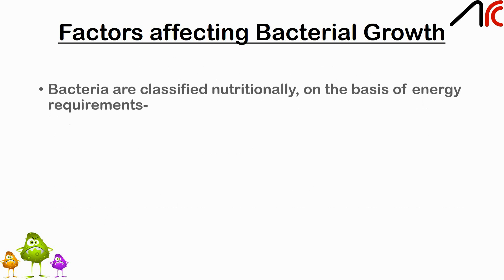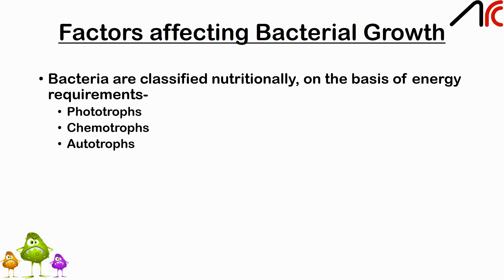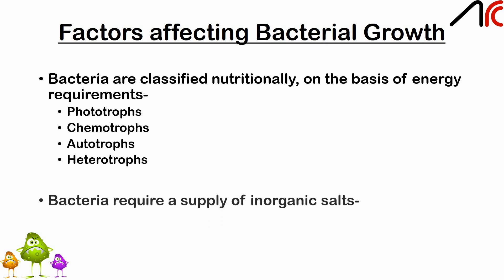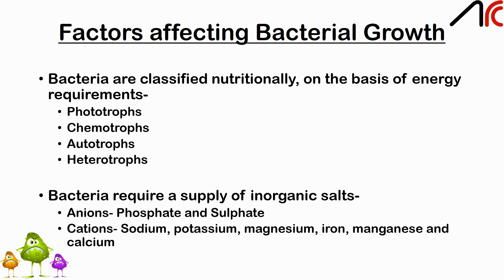Factors that affect growth: bacteria can be classified nutritionally based on energy requirement. Phototrophs derive their energy from sunlight; chemotrophs obtain energy from chemical reactions; autotrophs synthesize all their organic compounds; and heterotrophs depend on preformed organic compounds. Bacteria also require inorganic salts — anions such as phosphate and sulfate, and cations such as sodium, potassium, magnesium, iron, manganese, and calcium.